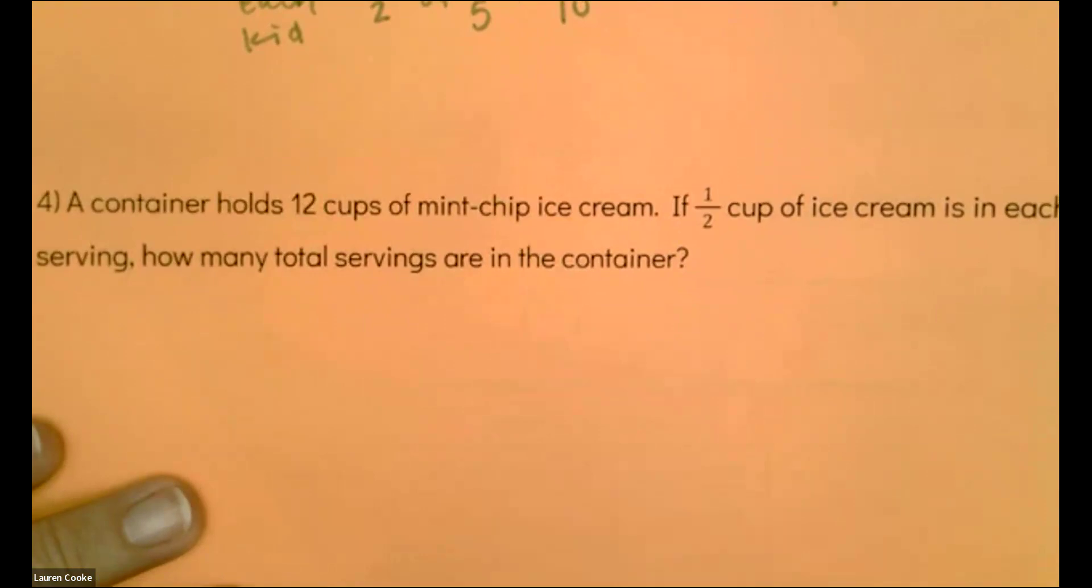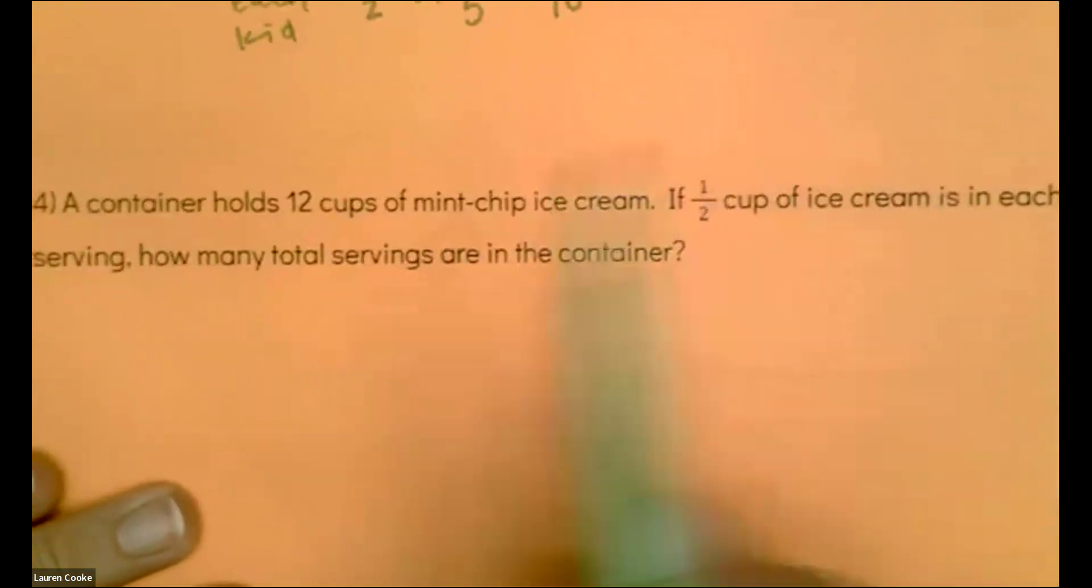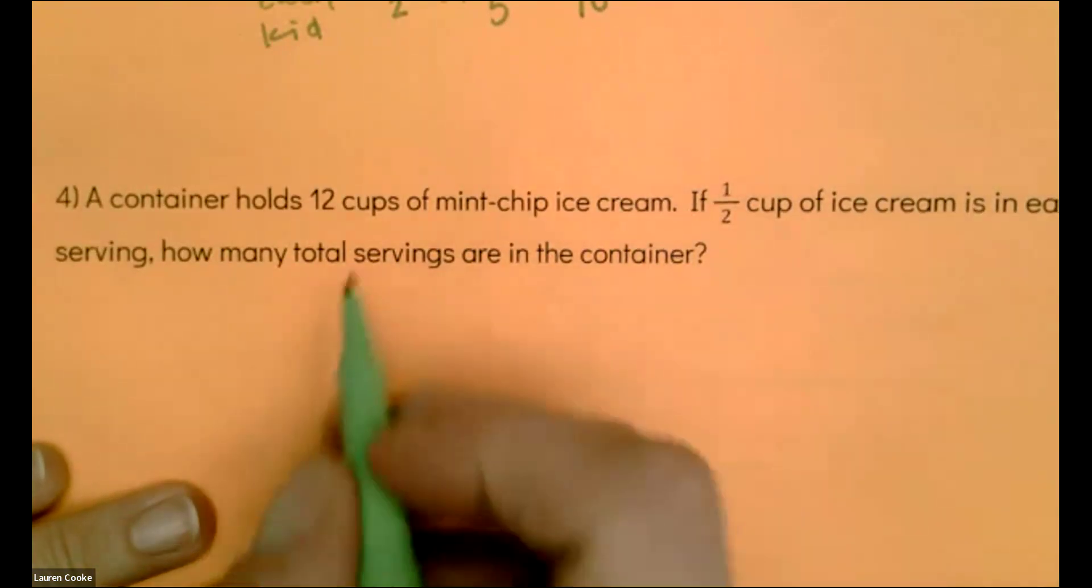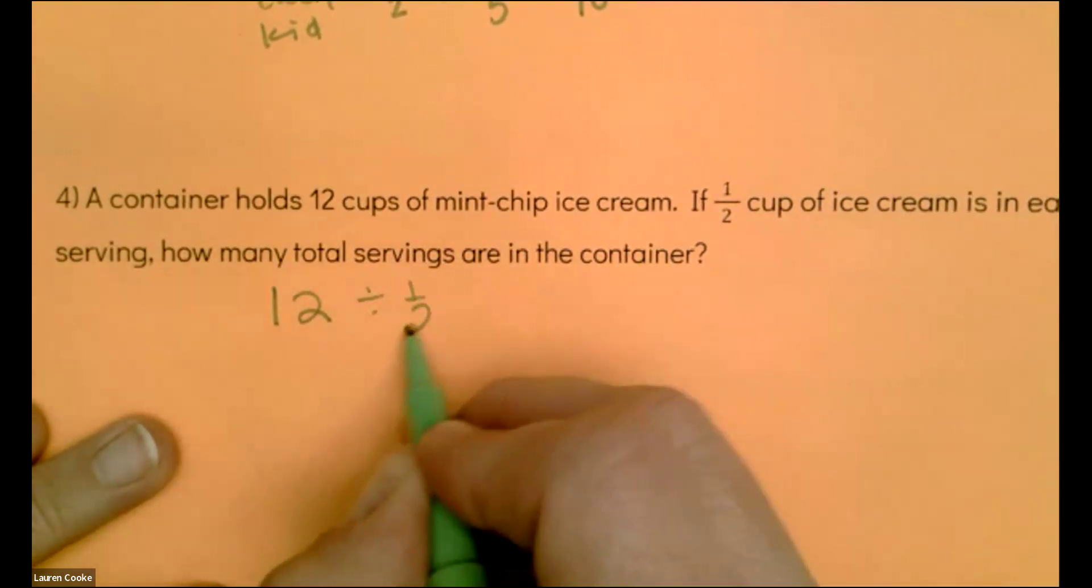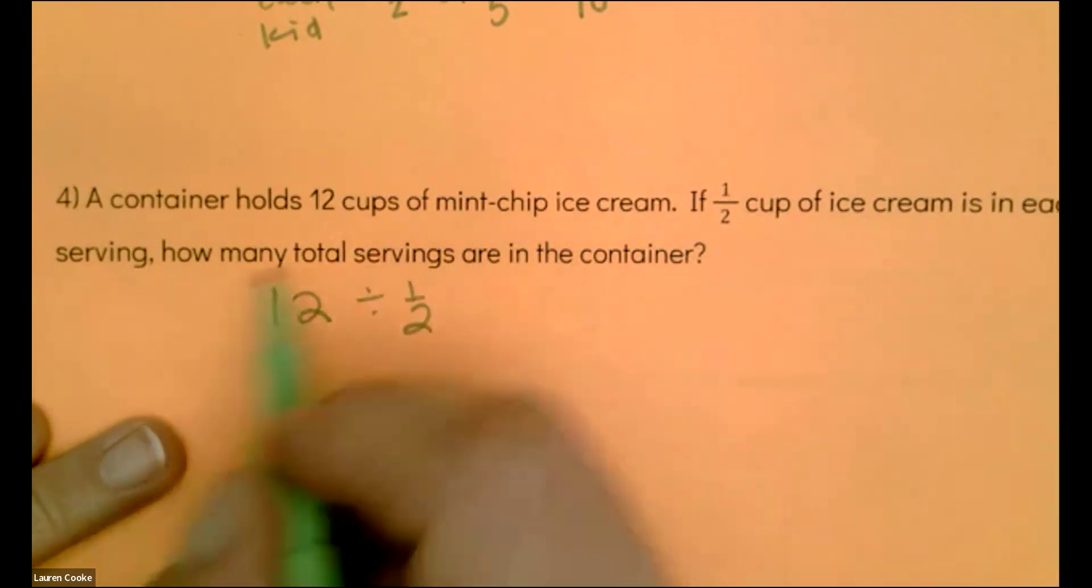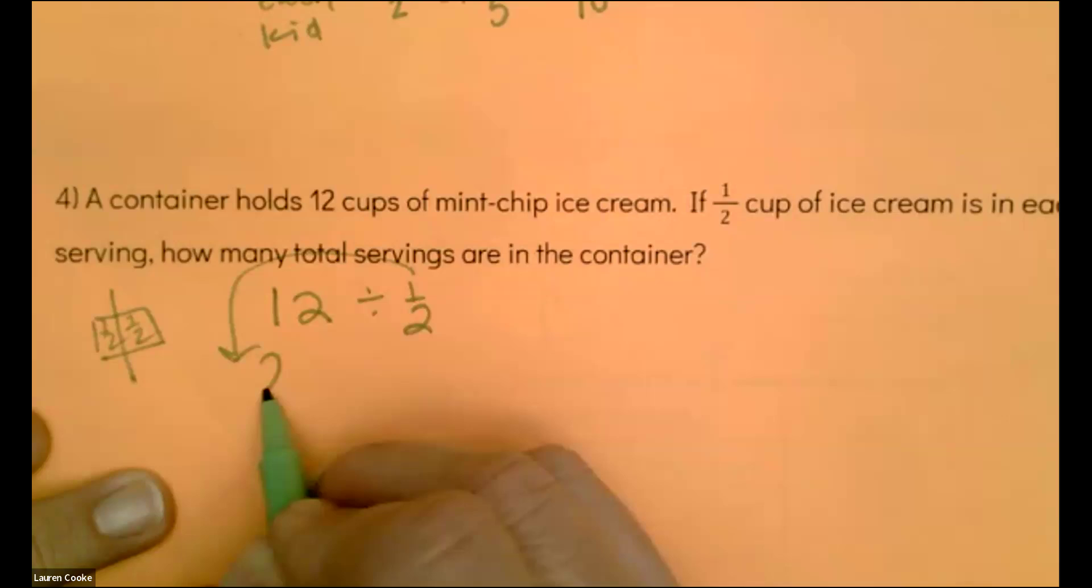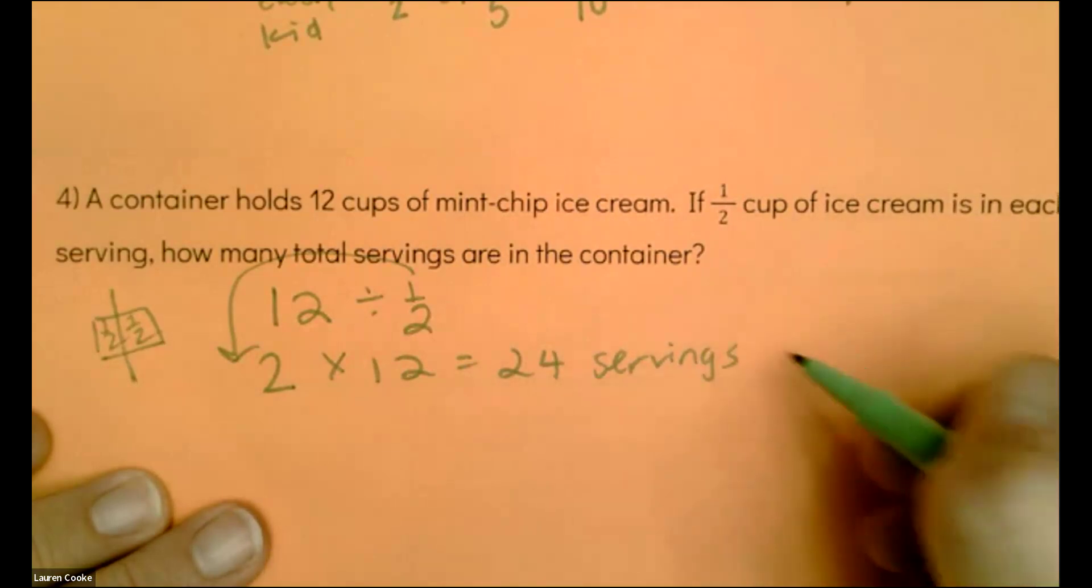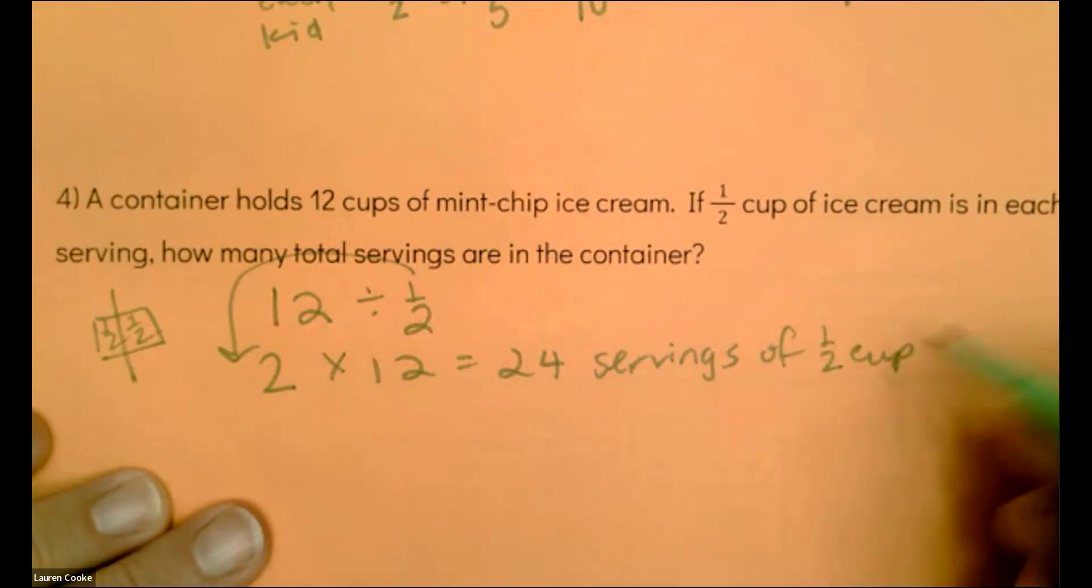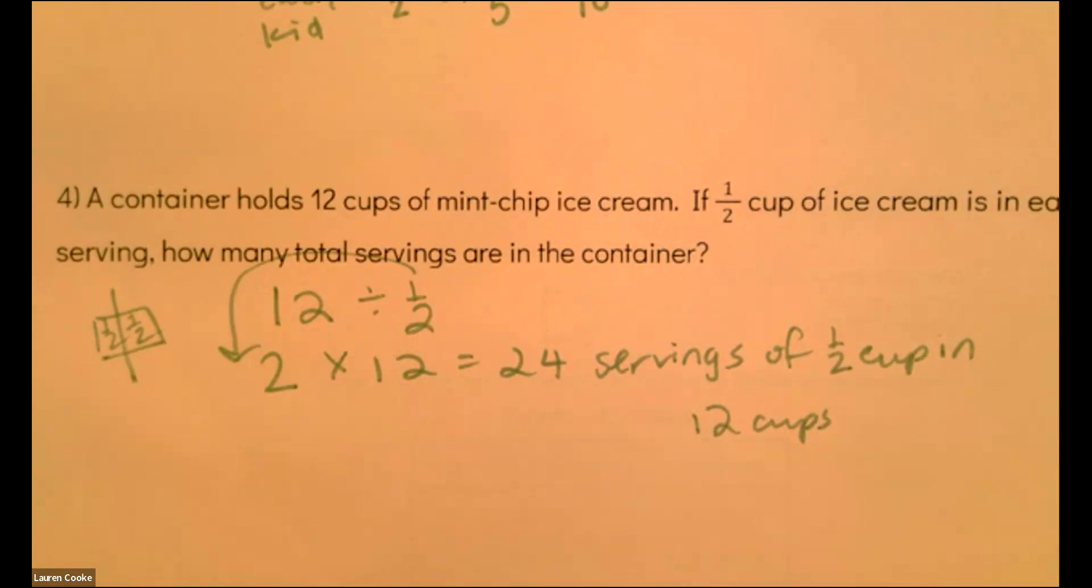A container holds 12 cups of mint chip ice cream. If one-half cup of ice cream is in each serving, how many total servings are in the container? Well, if I have 12 cups, and that's what I'm starting with, and each of my servings is one-half each, I want to know how many. If I have one, I'm going to have two in each one, and two times 12 is 24 servings of one-half cup in 12 cups, which makes sense because there's two halves in one.